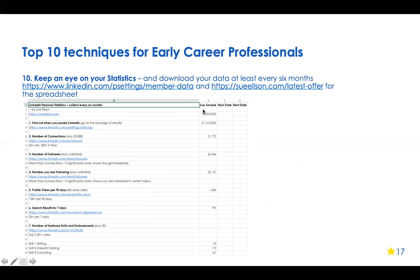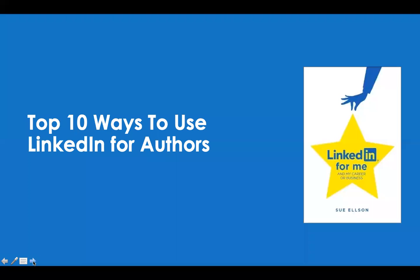Technique ten: this statistics spreadsheet is available via my website. It shows statistics you can track on your LinkedIn profile — for example, numbers from the 10th of May — and tells you how to get each statistic. The goal is to write down these numbers at different dates and compare them over time. This gives you a clue as to what is working for you.